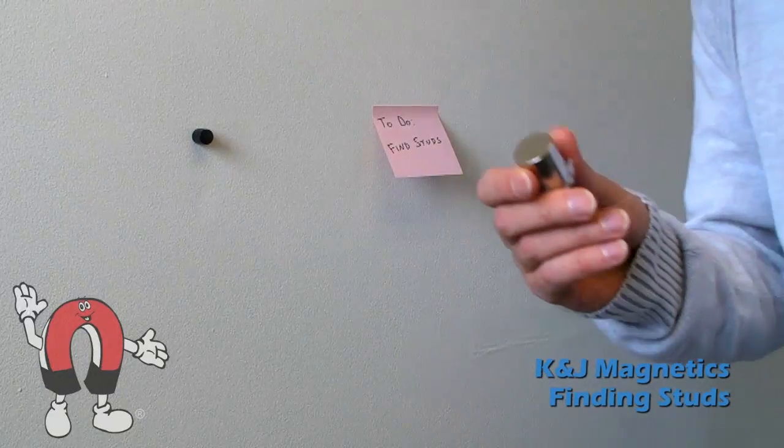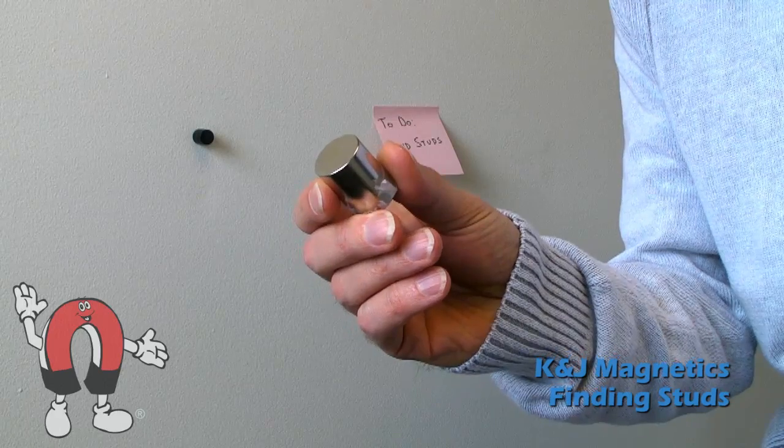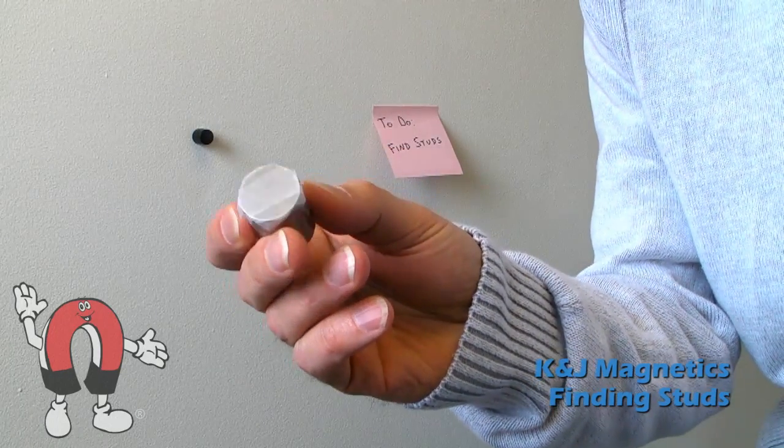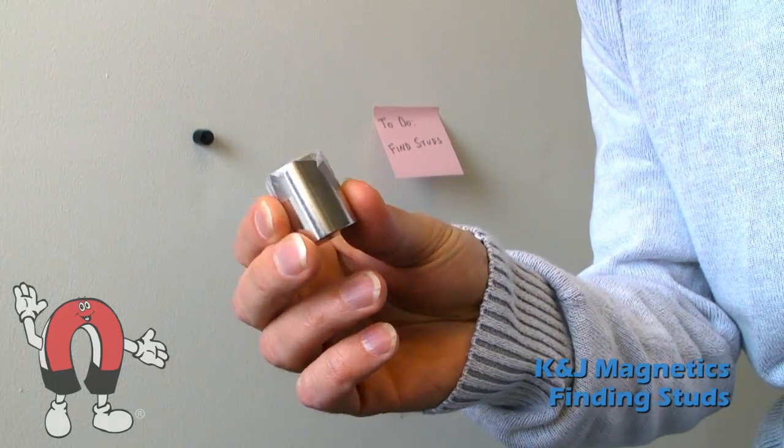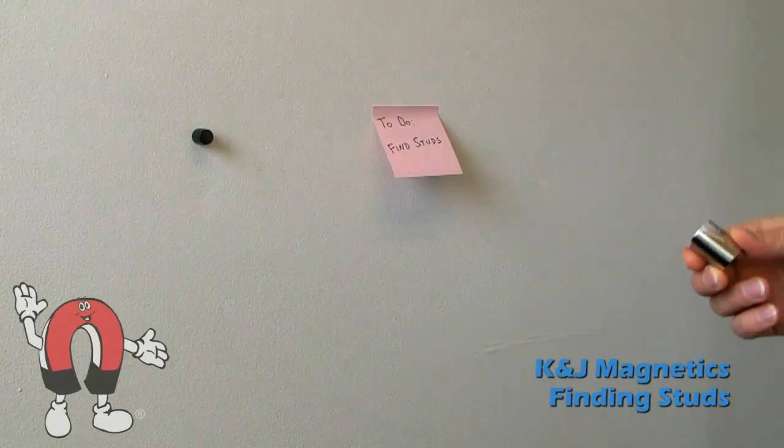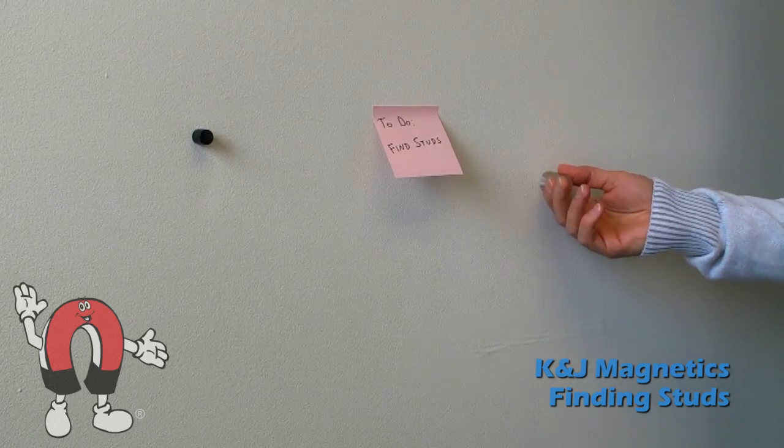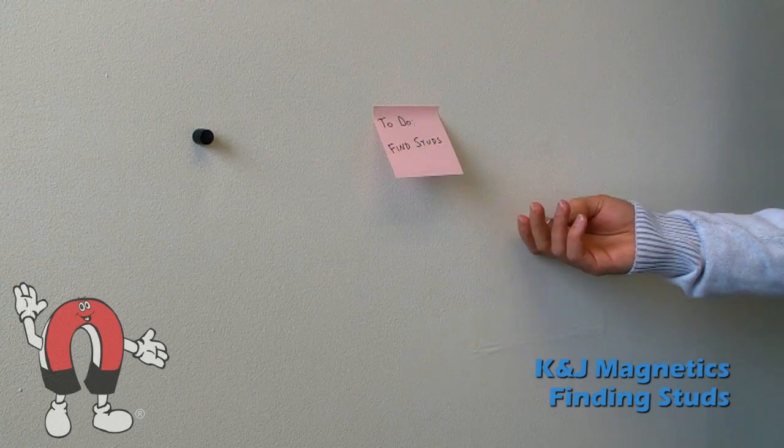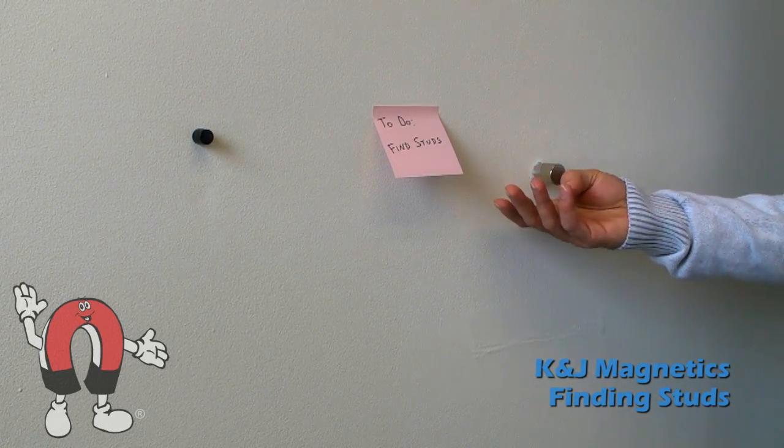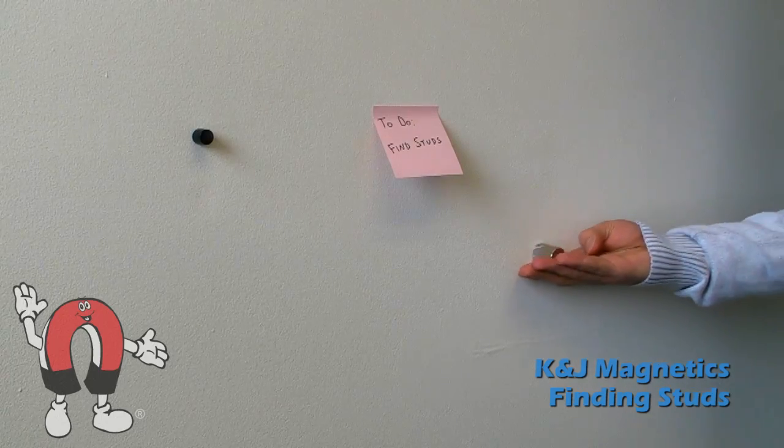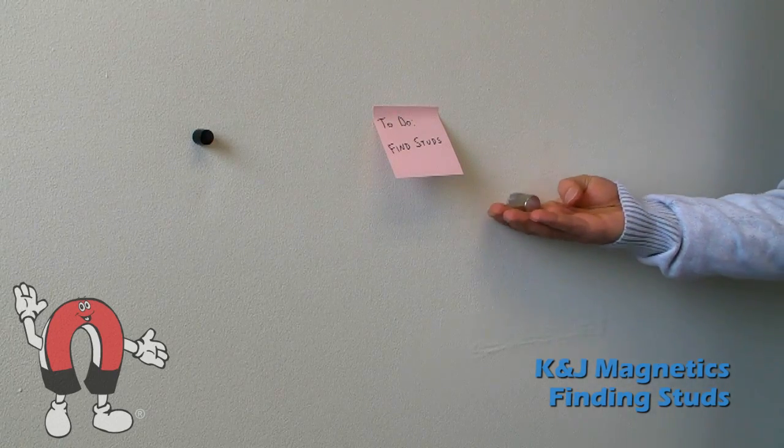You could also use a really big magnet to find the steel screws. This DEX2 magnet, it's a big powerful cylinder. It's going to work well to find steel screws hidden behind the wall. You don't really need a magnet this big. In fact, it's a little more powerful than the average person wants to handle. It can be a little dangerous when the two of these come together.